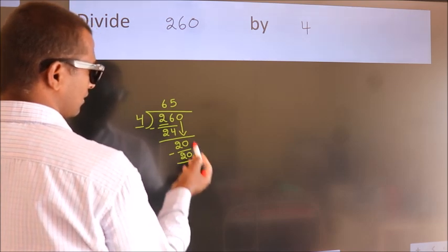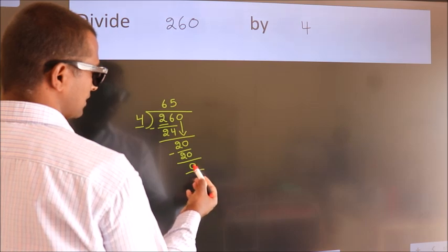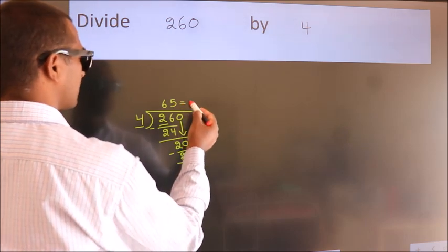After this, no more numbers to bring down. And we got remainder 0. So this is our quotient.